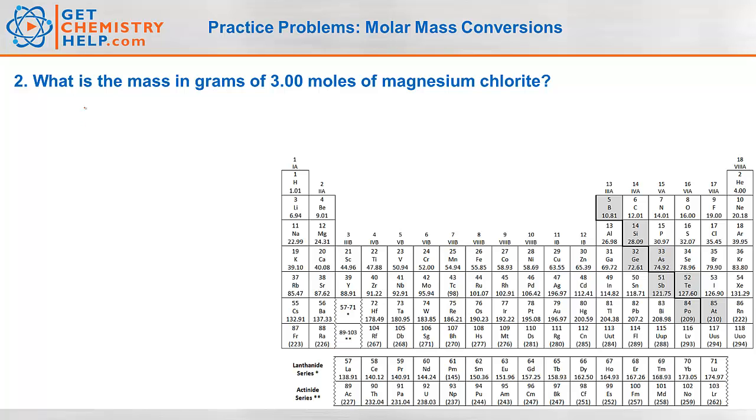Now our next calculation asks, what is the mass in grams of 3.00 moles of magnesium chlorite? Okay, well, magnesium is a metal. Chlorite is a polyatomic, so this must be an ionic compound. So we learned in our lesson on naming ionic compounds that magnesium chlorite, I would write that Mg and then ClO2 taken twice. Okay, let's find the molar mass of this.